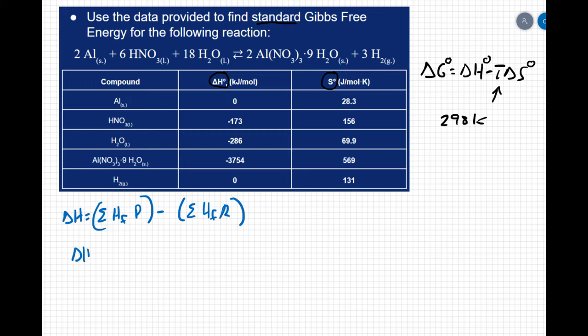So for my delta H I'm going to say my products, well I have my aluminum nitrate nonahydrate, that's one of my products. And so my heat of formation is negative 3754 kilojoules per mole. But I have 2 moles of this compound, so I'm going to say 2 times negative 3754 plus the heat of formation of my hydrogen.